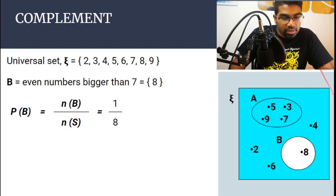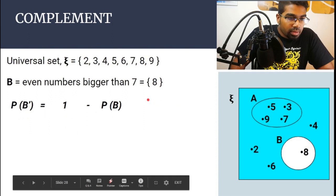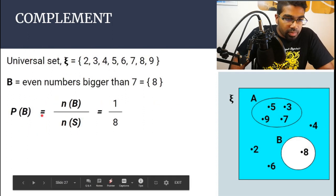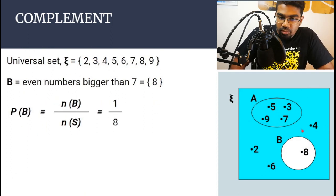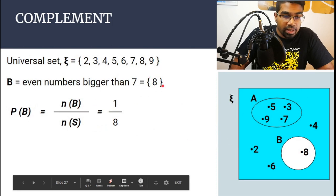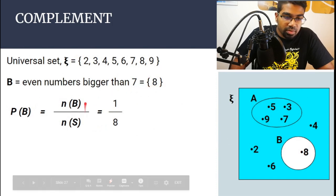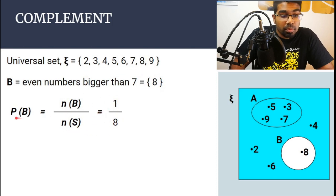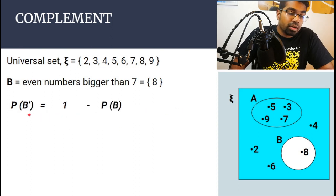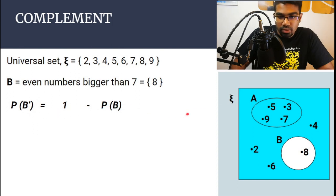Let's apply this with an example using set B. Set B has only one element — eight — so the number of times event B occurs is one out of the total eight outcomes. Therefore P(B) = one over eight. Now how do we find the probability of the complement of B?